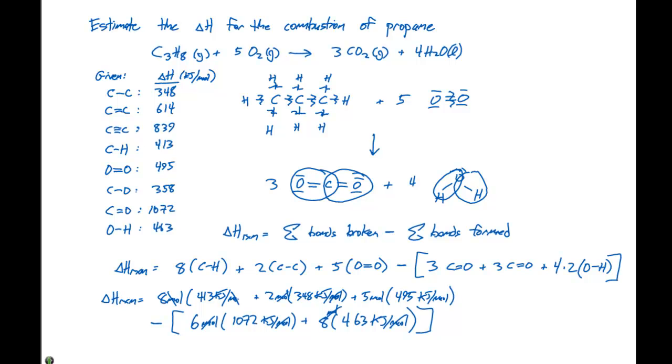If we do the math and add up all the terms, we get negative 3661 kilojoules for the total delta H of this reaction.